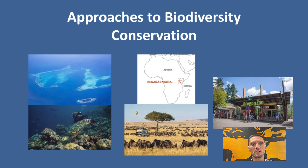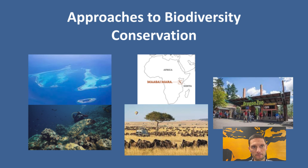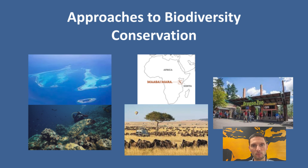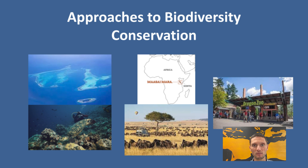Ex Situ is the preservation of species outside of their natural habitats. Examples include the growth of plants in botanical gardens or animals in zoos, made possible by removing species to a new location to protect them from environmental impacts. For example, birds in New Zealand moved to offshore locations to protect from invasive species. Or long-term storage of germplasm — material that would be used to propagate species in the future, such as seed banks or egg and sperm storage.